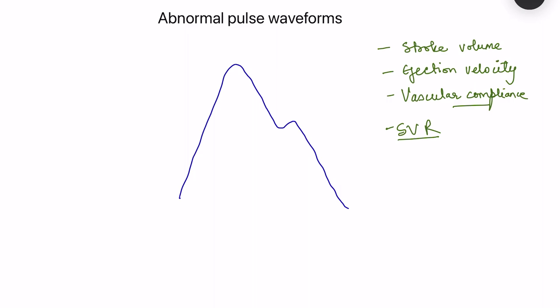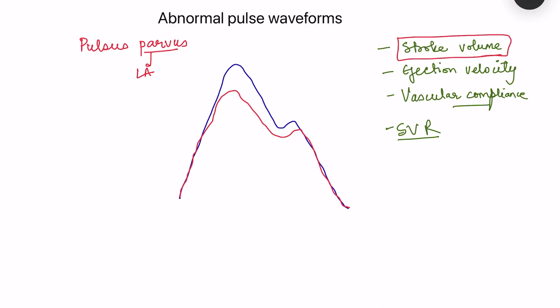The first abnormal pulse is pulsus parvus, meaning low amplitude pulse. The amplitude depends on stroke volume, so a reduced stroke volume produces a low amplitude pulse. This occurs whenever there is less blood in the left ventricle or the strength of ventricular contraction is weak — for example in shock or mitral stenosis, where the end diastolic volume reaching the left ventricle is reduced.